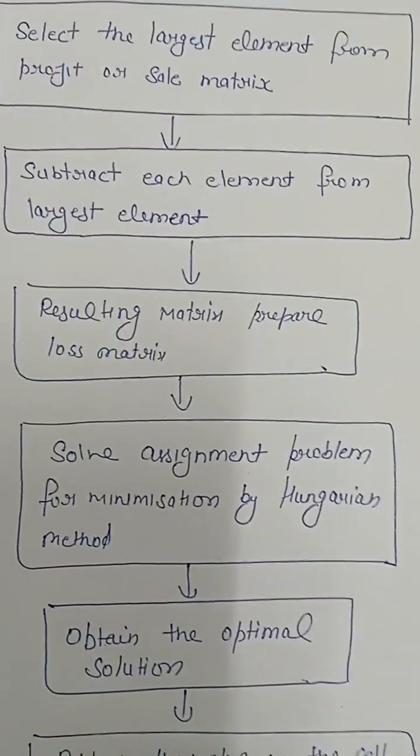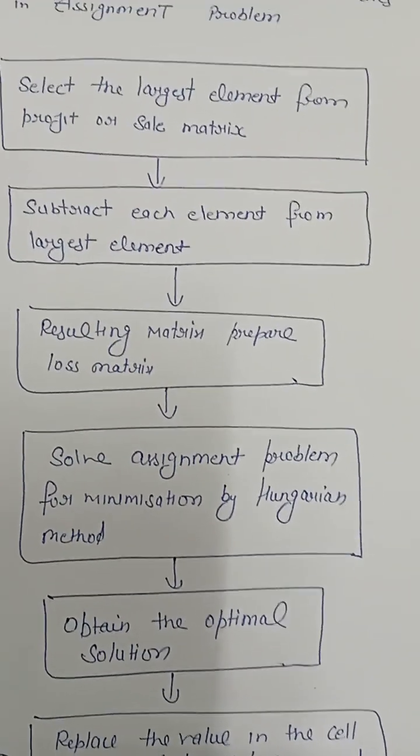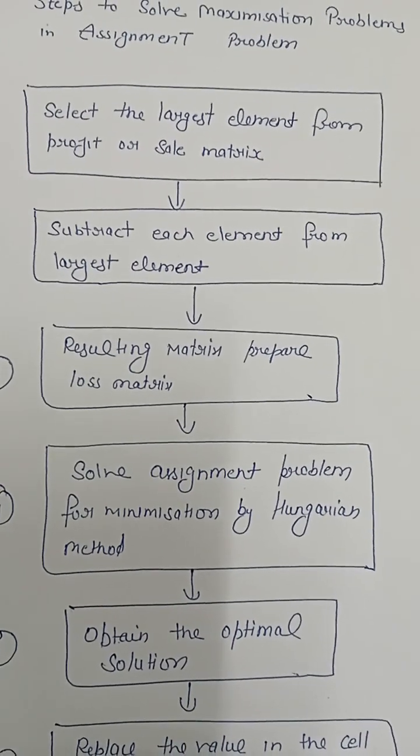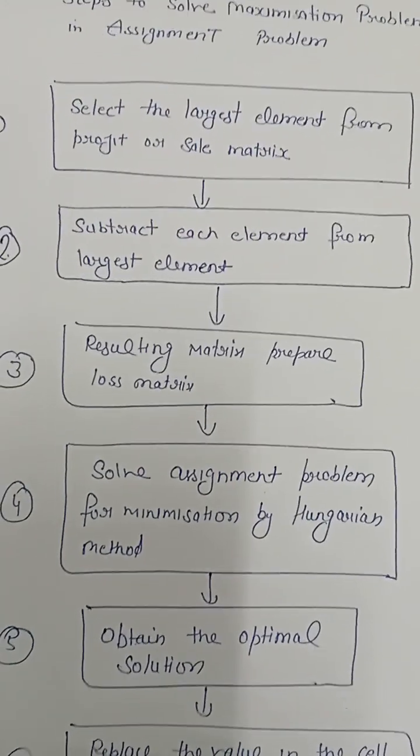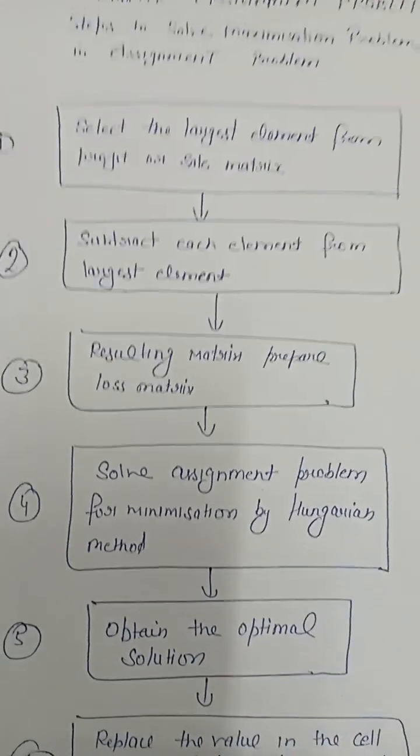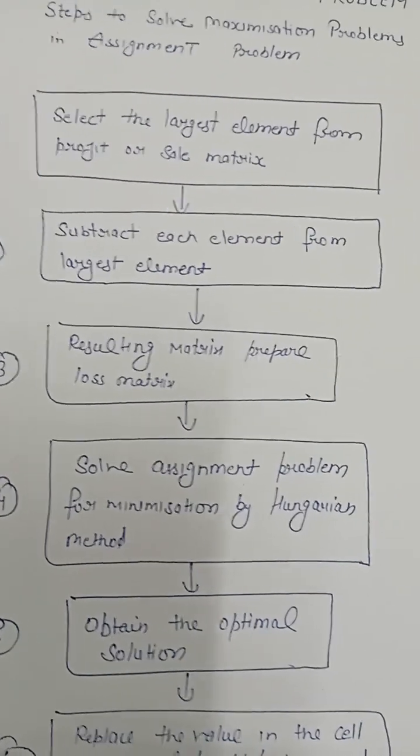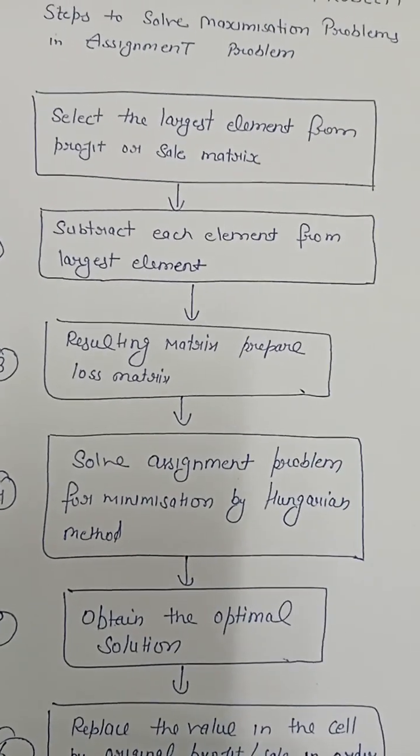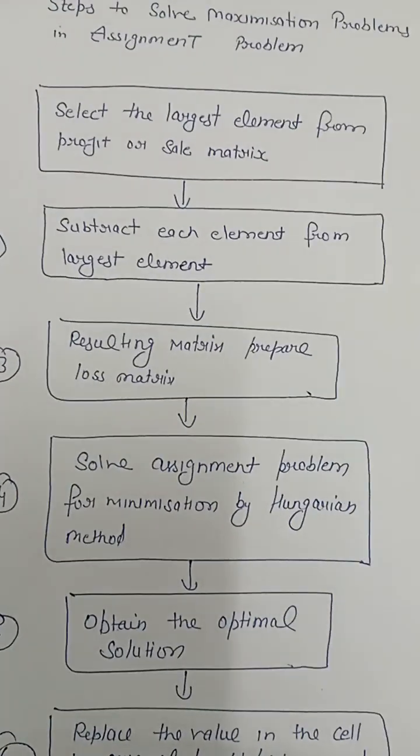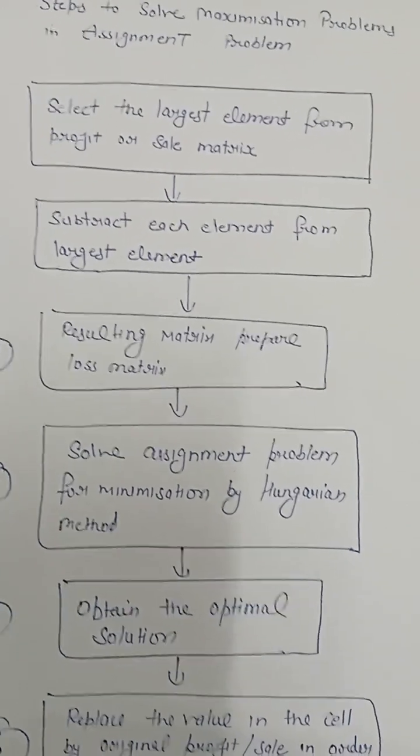After preparing the loss matrix, now the assignment problem will be solved by the Hungarian method. In the previous video, we already discussed the Hungarian method. First of all, we reduce the table according to row wise for selecting the minimum element.